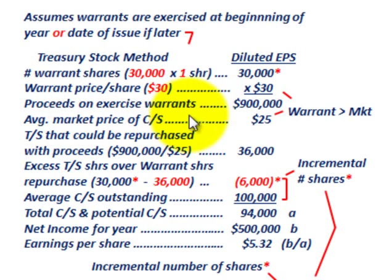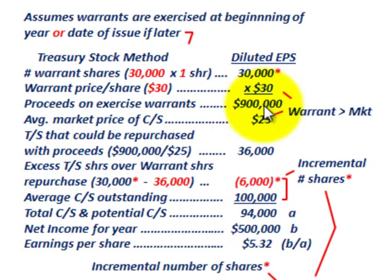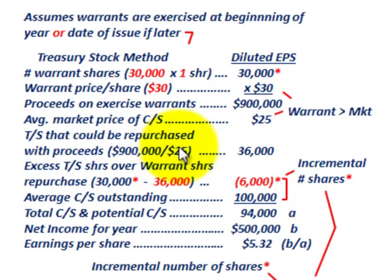The average market price for common stock is $25 per share, which we compare to the warrant price. The warrant price of $30 is greater than the average market price of $25 per share. Using the treasury stock method, the treasury stock that could be repurchased with the $900,000 proceeds — dividing $900,000 by the $25 per share market price — means you could buy back 36,000 shares of treasury stock.